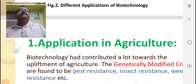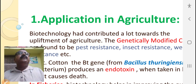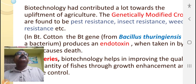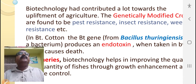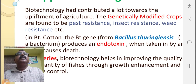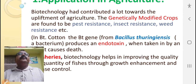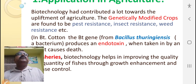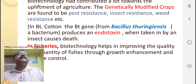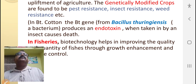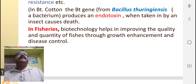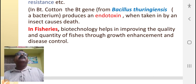In agriculture, biotechnology has contributed a lot towards the upliftment of agriculture. Genetically modified crops are used in agriculture to enhance the product and to save the crops from the attack of pests and insects. These crops are made to be pest resistant, insect resistant, and weed resistant. For example, in case of Bt cotton, the Bt gene from Bacillus thuringiensis is introduced into the cotton plant.